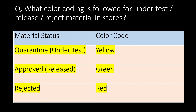What color coding is followed for under-test, release, and rejected material in stores? For quarantine (under test): yellow; for approved or release state: green; and for rejected: red color code is used.